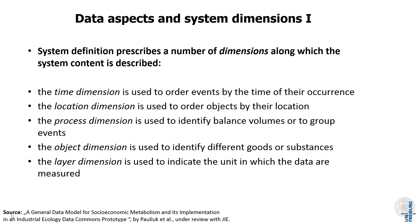What makes industrial ecology data special is the location of the data in the system. The systems we deal with have different dimensions. The most common are time and location — for example, a study on China from 1980 to 2050. There is also the process dimension, such as the steel industry or the supply chain of plastics. Within processes we have different objects: crude oil, refined oil, ethene, polyethylene, waste plastics — objects is a general category for products, goods, materials, substances, commodities, waste, and so on. Finally, we have a layer dimension: mass layer, energy layer, monetary layer, and more.